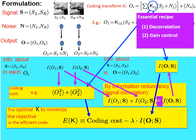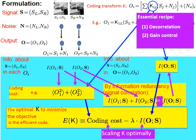The second step in the recipe is gain control. This is done individually for each decorrelated channel. It scales K so that we do not increase the cost too much just for only a little bit of extra information. The third step in the recipe is to multiplex signals in different output channels, which I will explain later.